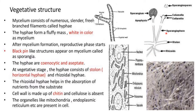The vegetative structure of Mucor: the mycelium consists of numerous slender, freely branched filaments called hyphae. The hyphae form a fluffy mass, white in color. After mycelium formation, the reproductive phase starts, and a black pin-like structure called sporangia appears on the mycelium.